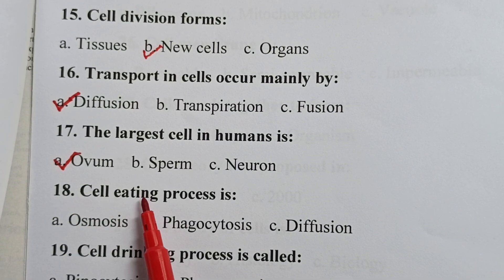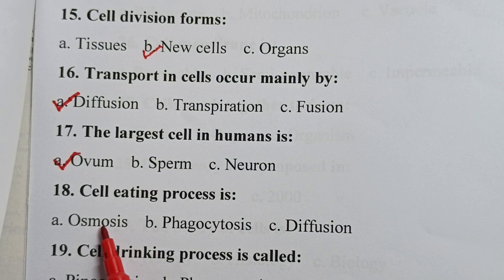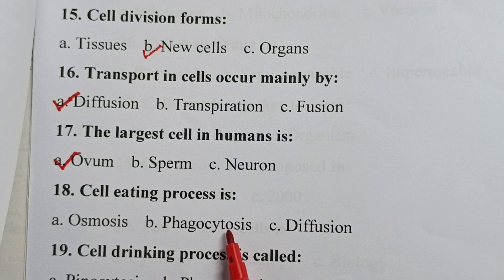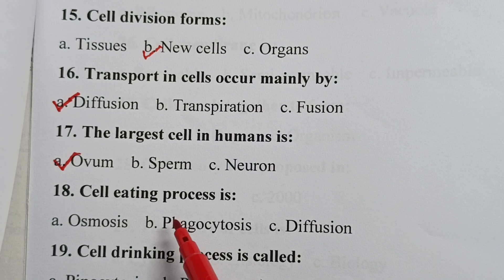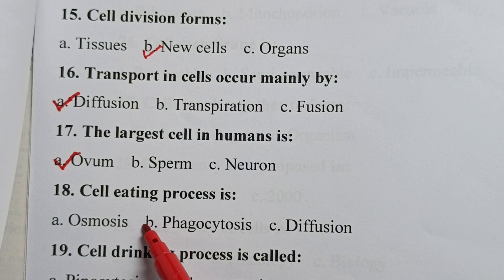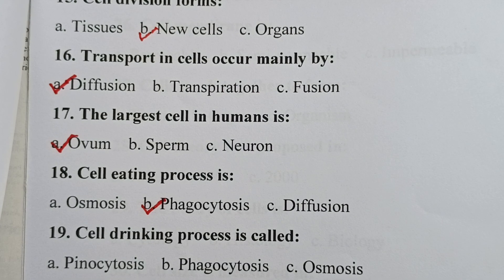Question eighteen: the cell eating process is — is it osmosis, phagocytosis, or diffusion? Your correct answer is phagocytosis. Phagocytosis is a process where the cell engulfs large macromolecules.